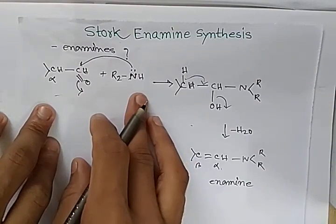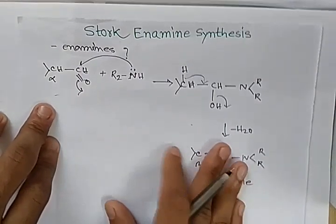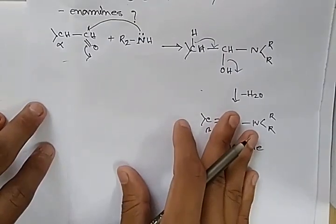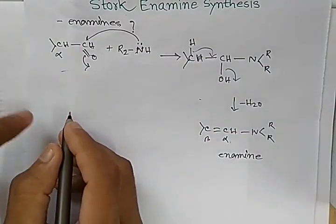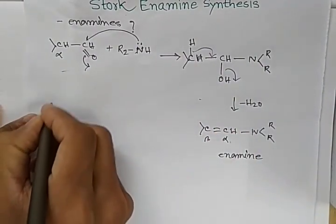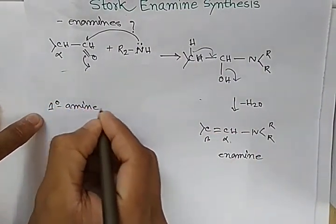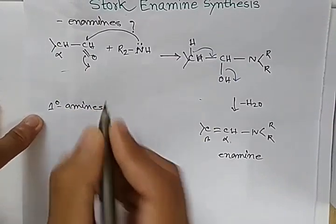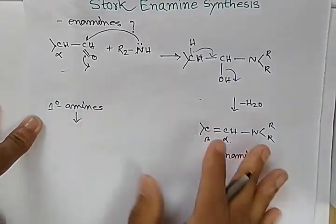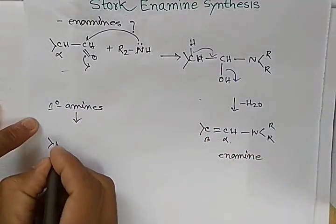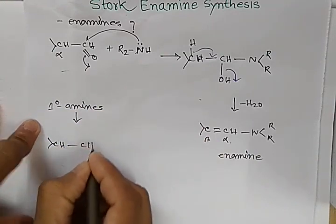So an enamine is an unsaturated compound derived from an aldehyde or ketone and a secondary amine. You can also use a primary amine. A primary amine also forms an enamine.